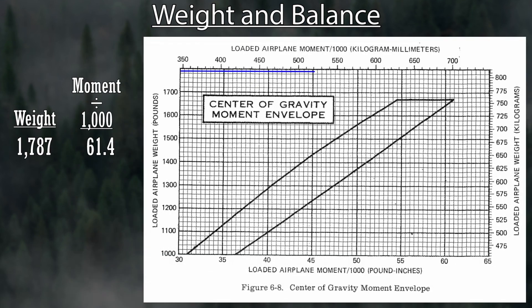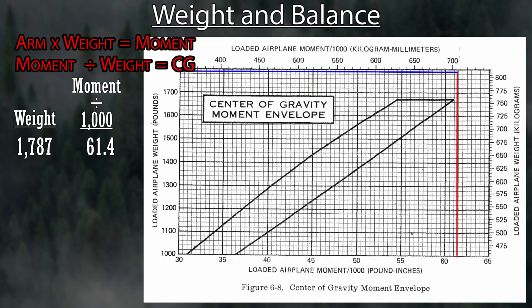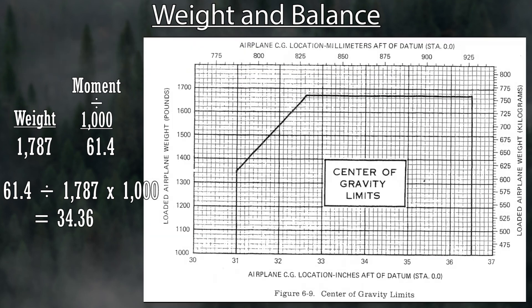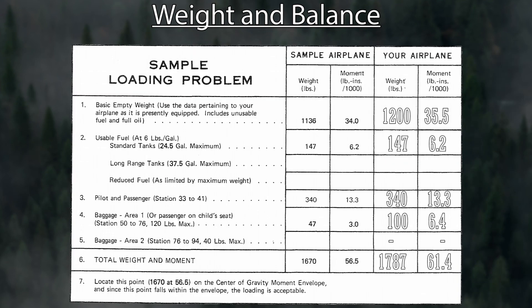Going to our moment envelope, you can see that 17.87 is not within the envelope, and neither is 61.4. So you're outside your weight and balance limits. We can also calculate the CG: 61.4 divided by 17.87, times 1,000 gives a CG of 34.36 — so you're within the CG limit. But 17.87 is way out there, meaning you're exceeding your weight limits.